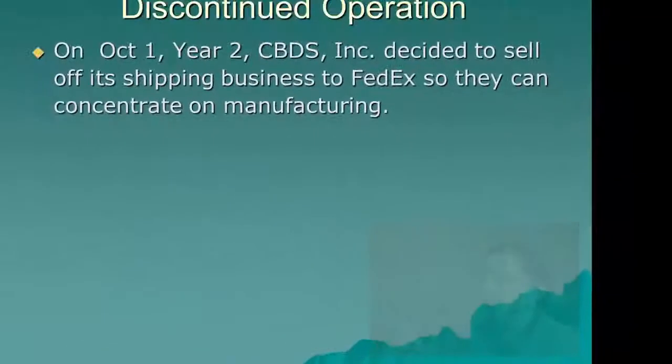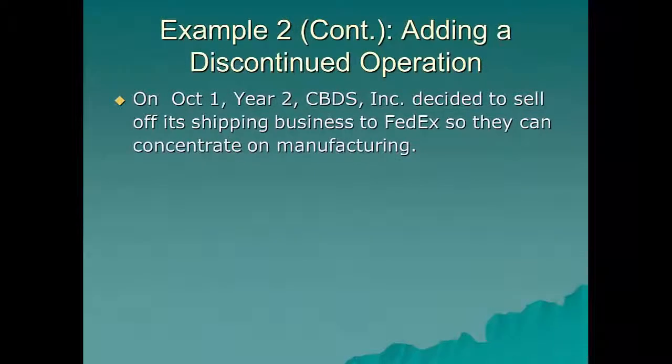In this segment, we get to continue on with that discussion, introducing the two adjustments that go below the line — income from continuing operations. We're going to start with discontinued operations.